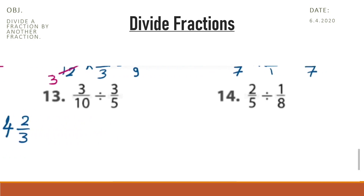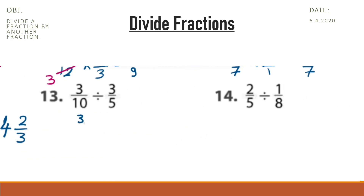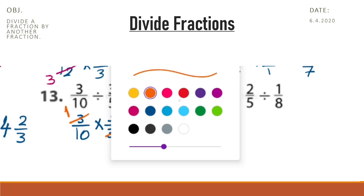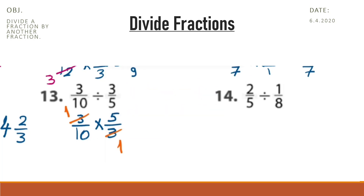In question 13, write 3 tenths as it is, multiply, and the reciprocal is 5 thirds. Simplify: 3 divided by 3 is 1 and 3 divided by 3 is 1. We can also simplify 5 and 10: divide by 5 — it will be 2; divide by 5 — it will be 1. Now multiply: 1 by 1 is 1 and 2 multiplied by 1 is 2. The answer is 1 half.